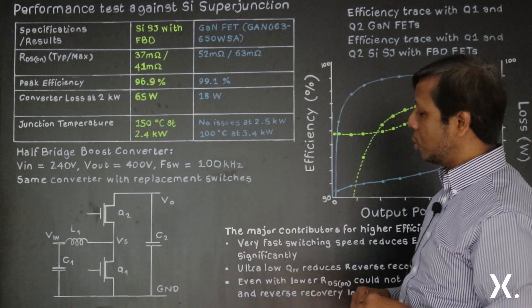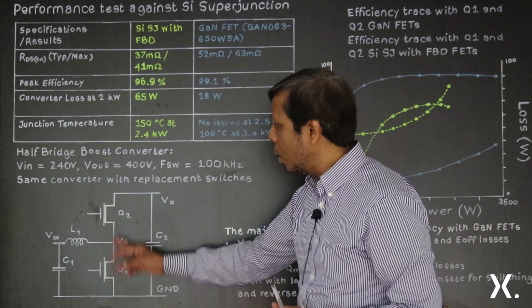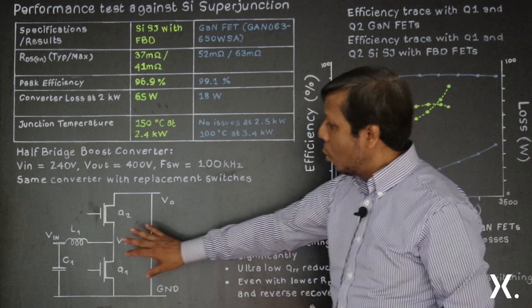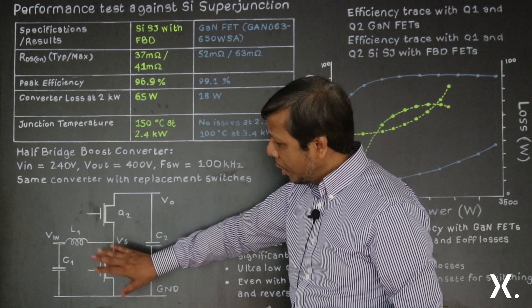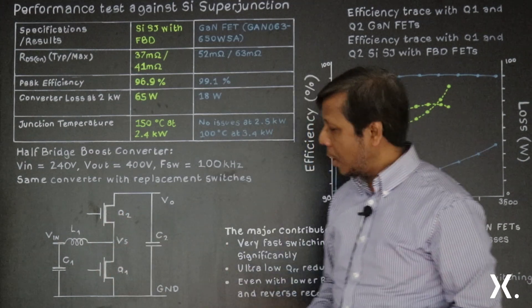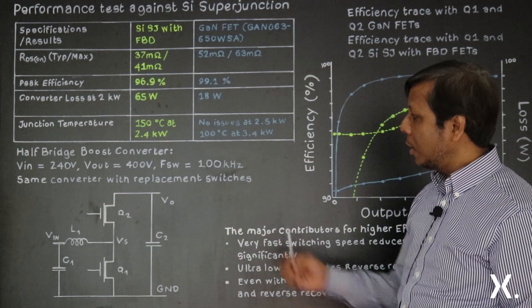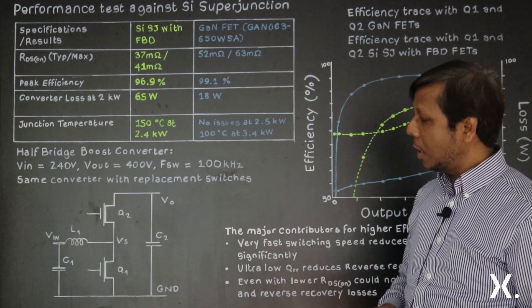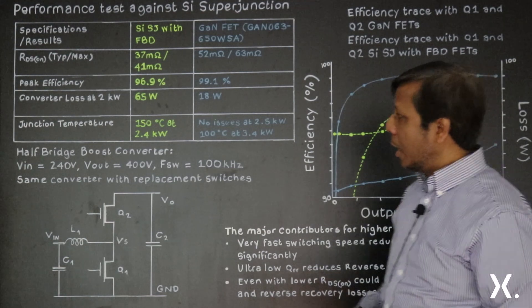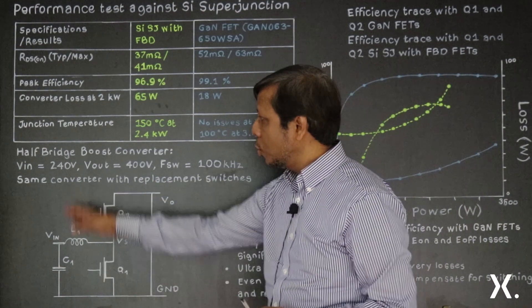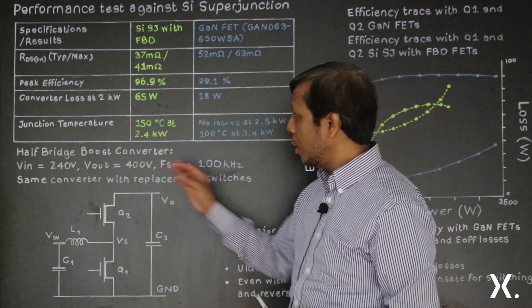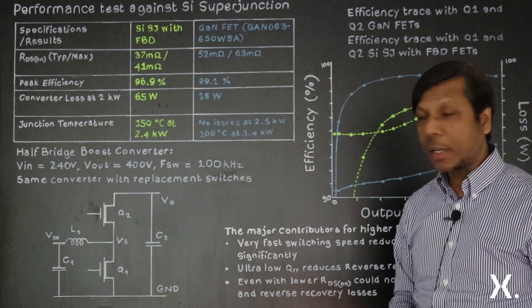In this simple half-bridge configuration, we have Q1 and Q2 switches. What we are doing is using silicon-based FETs here and then replacing with gallium nitride-based FETs and comparing their efficiency and power loss performance. This particular configuration has got 240 volt input, 400 volt output, and is running at 100 kilohertz.